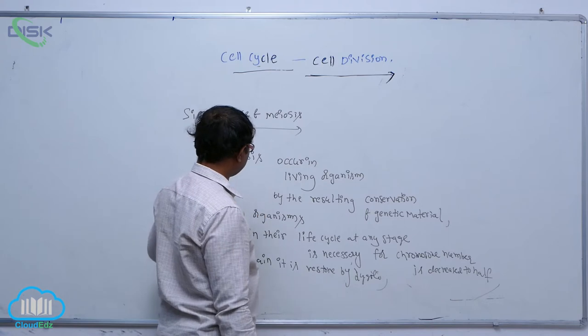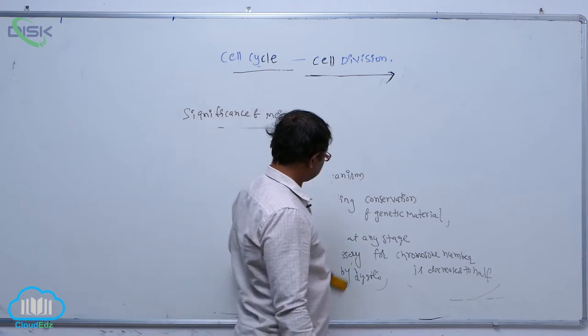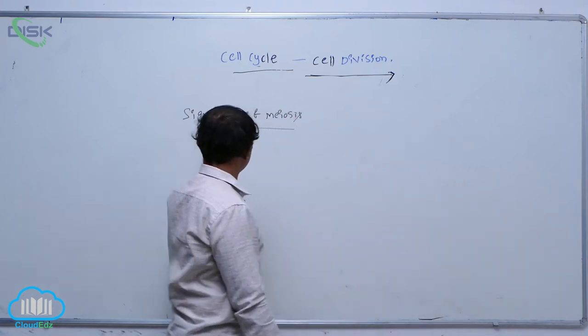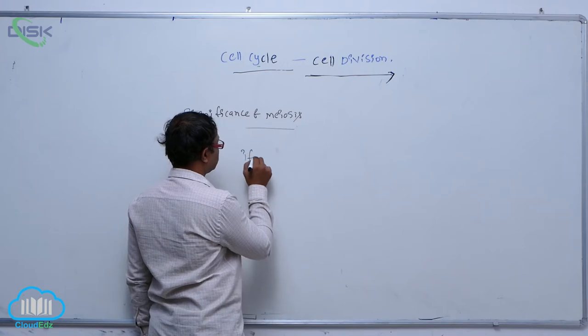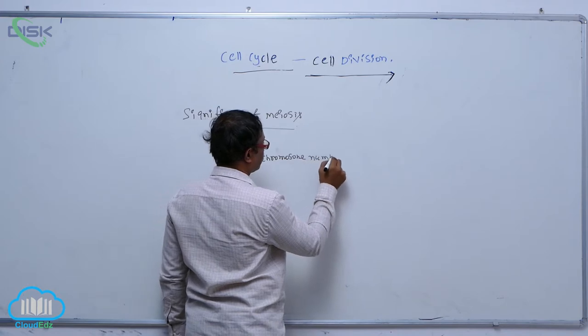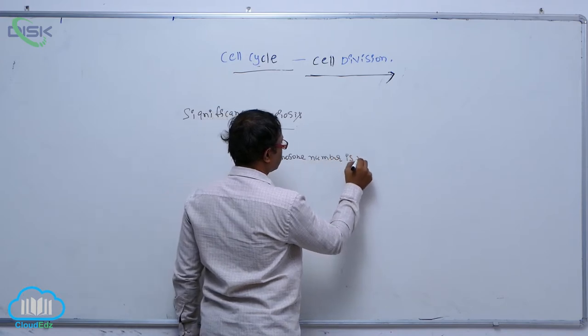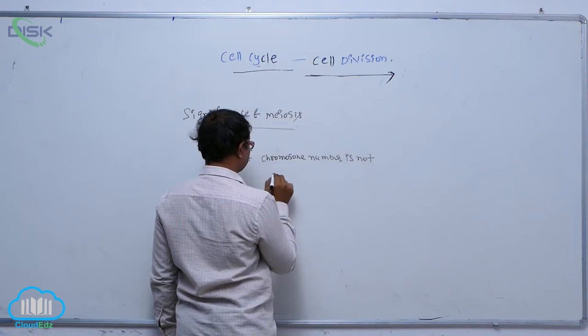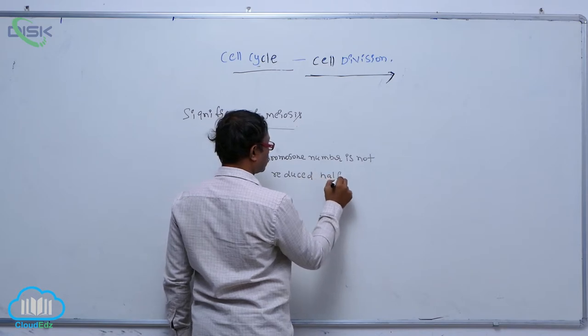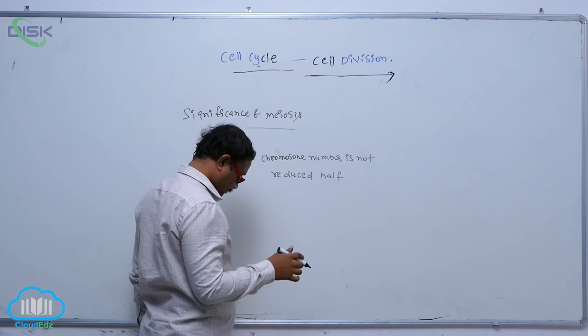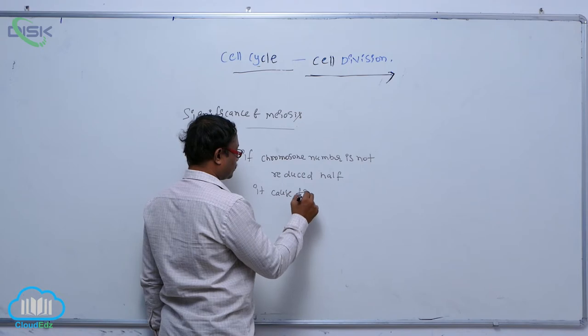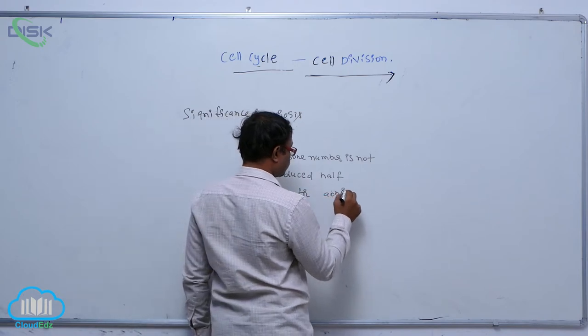For example, if chromosome number is not reduced to half, if chromosome number is not reduced to half, it is caused for abnormal condition in a cell.